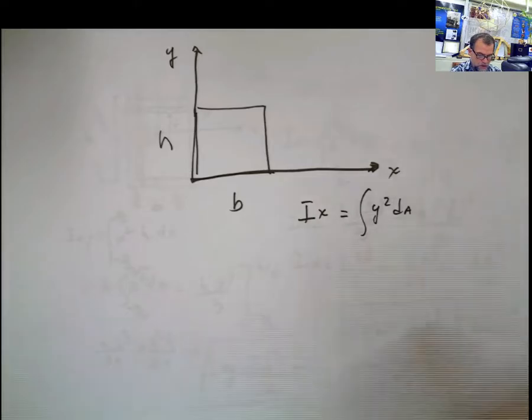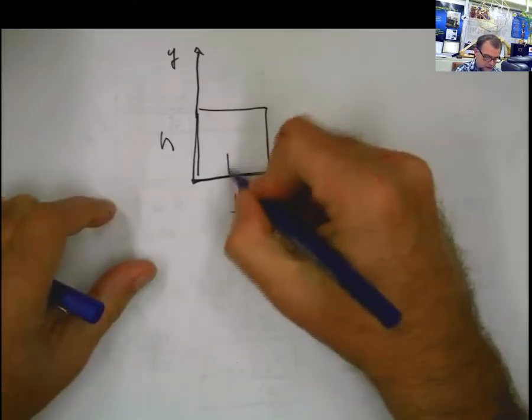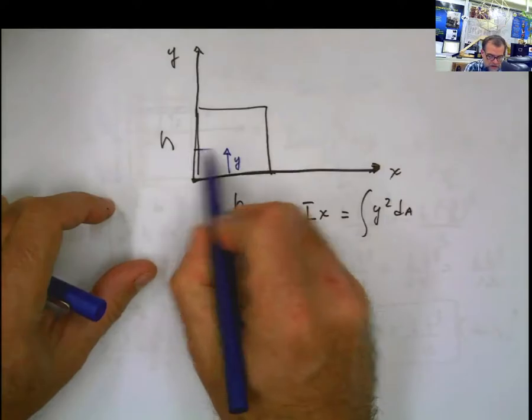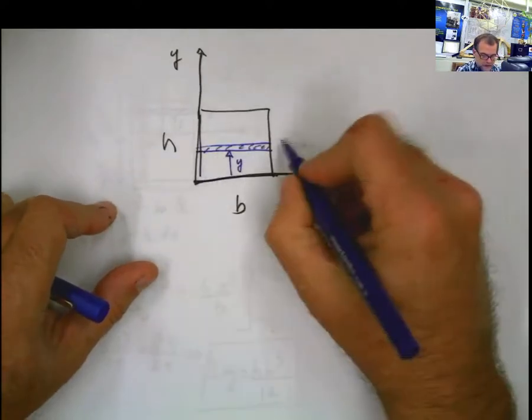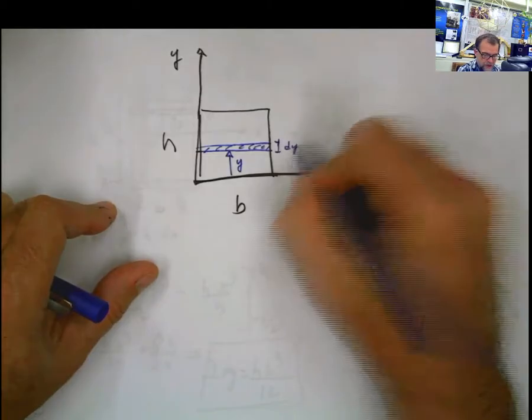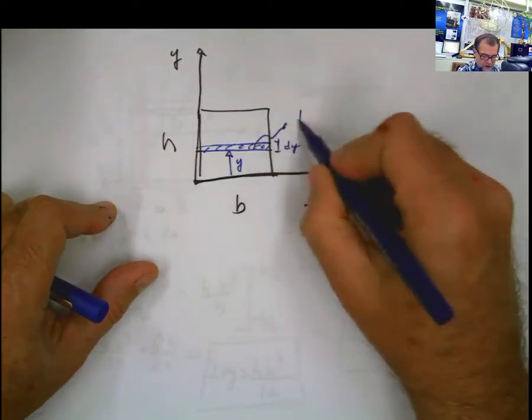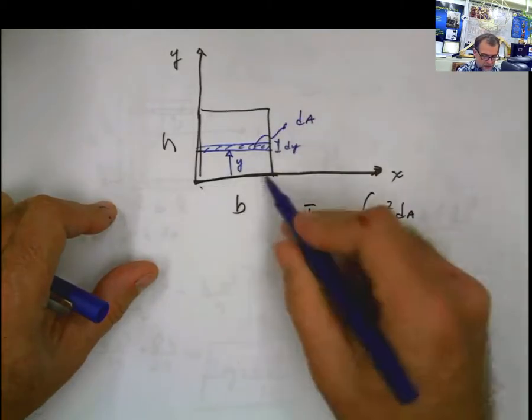I'm going to measure y in this direction. And this is my differential of area perpendicular to that y. That means that this value here is dy. And my differential of area, dA, is going to be equal to b times dy.